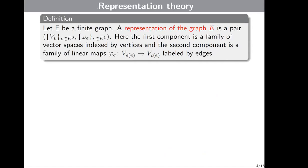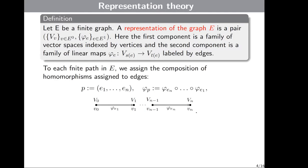Now let's define what a representation of graph E is. A representation of graph E is a pair of two families: the first component is a family of vector spaces indexed by vertices, and the second component is a family of linear maps labeled by edges. We can also assign a homomorphism to some path, equal to the composition of homomorphisms assigned to edges from that path.